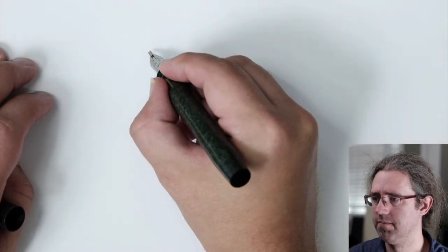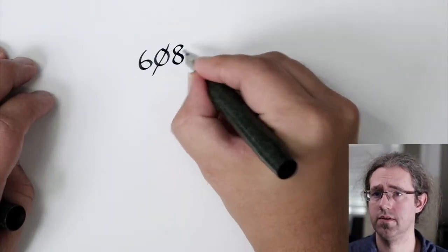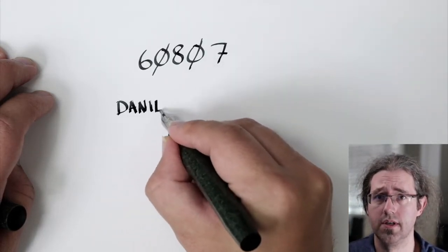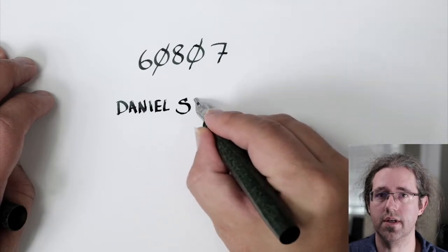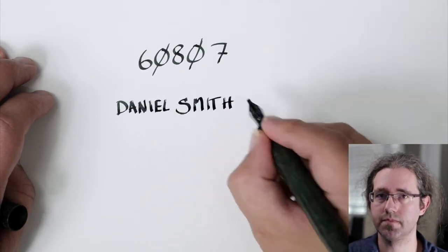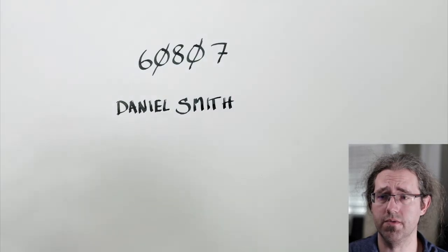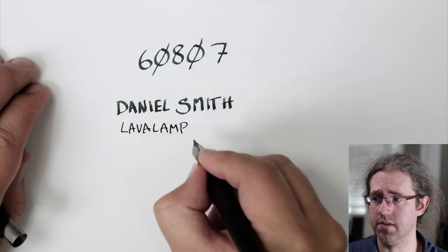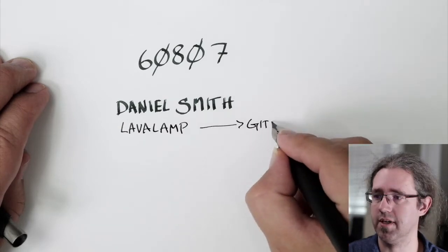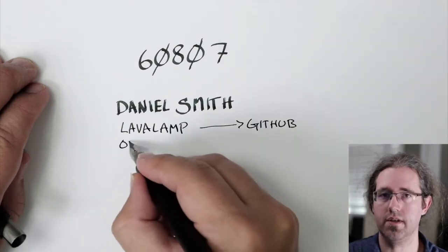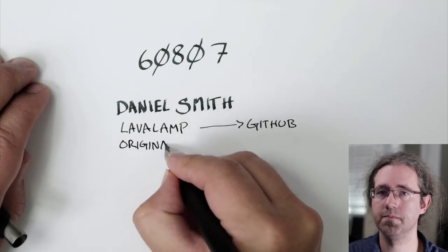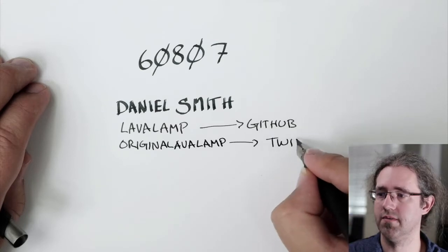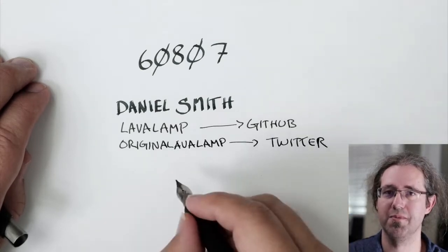Hi everyone. Today I'd like to tell you a story. The story is called 60807. I'm Daniel Smith. I co-TL the API Machinery SIG. I've been working on Kubernetes since before it was open source. I'm Lavalamp on GitHub, original Lavalamp on Twitter. I work for Google. I'm a software engineer. I'm not speaking on behalf of Google, other than to say support my presence in open source.